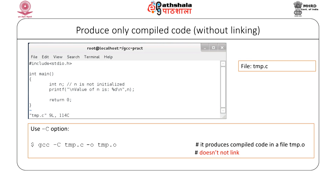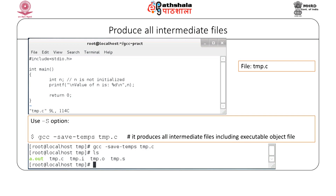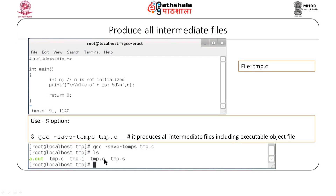To produce compiled code without linking, use the minus capital C option: gcc -C tmp.c -o tmp.o. This produces compiled object code in tmp.o without linking with library functions. To produce all intermediate files in a single command, use the minus save-temps option: gcc --save-temps tmp.c. This generates the executable file, the assembly code, the intermediate compiled code, and the preprocessor output all at once.